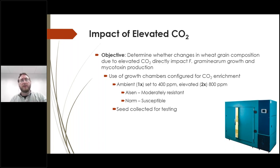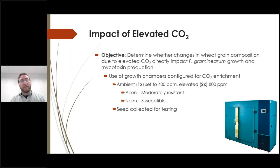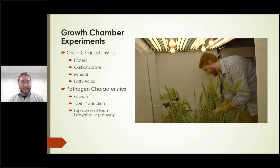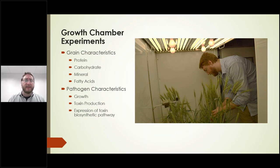We used growth chambers configured for CO2 enrichment — set at 400 parts per million (approximately ambient) and at elevated 800 parts per million. We selected two wheat cultivars: Elsin, which is moderately resistant to Fusarium head blight, and Norm, which is a susceptible variety. We grew them to maturity and collected their seed for testing. We looked at protein concentration, carbohydrate concentration, mineral concentration, and fatty acid content. Then when we grew fungal pathogens on the grain, we looked at fungal growth, toxin production, and expression of toxin biosynthetic pathways.